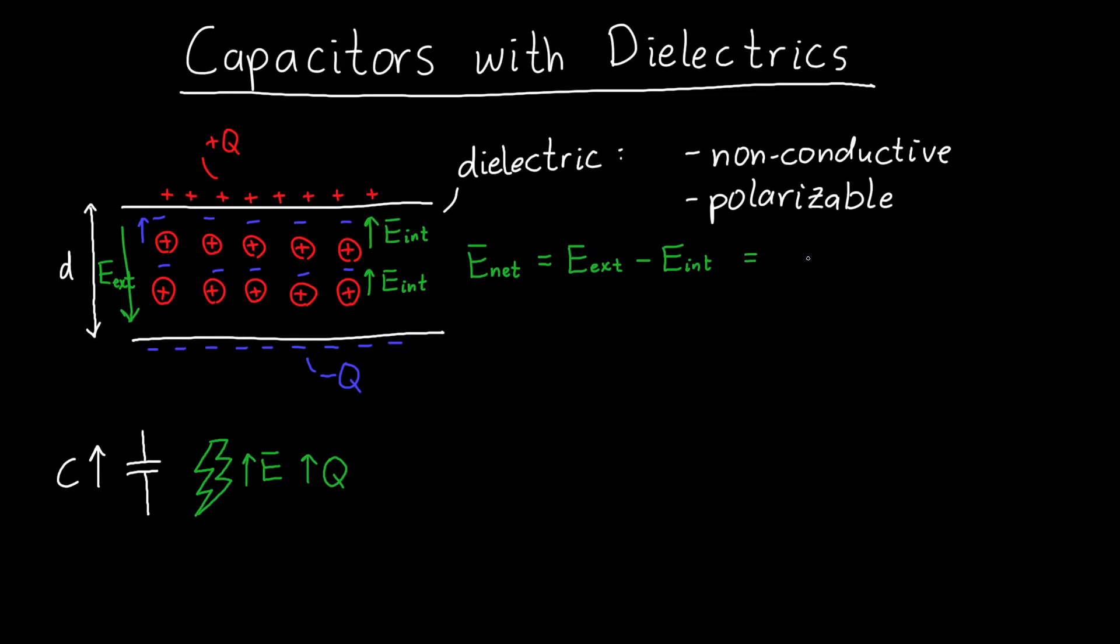And so my total field, my net electric field, is E external divided by some coefficient, which I'll call epsilon r, because I happen to know the future. And epsilon r is usually bigger than one, so that my new field, my net field, is smaller than it originally was without this material inside.